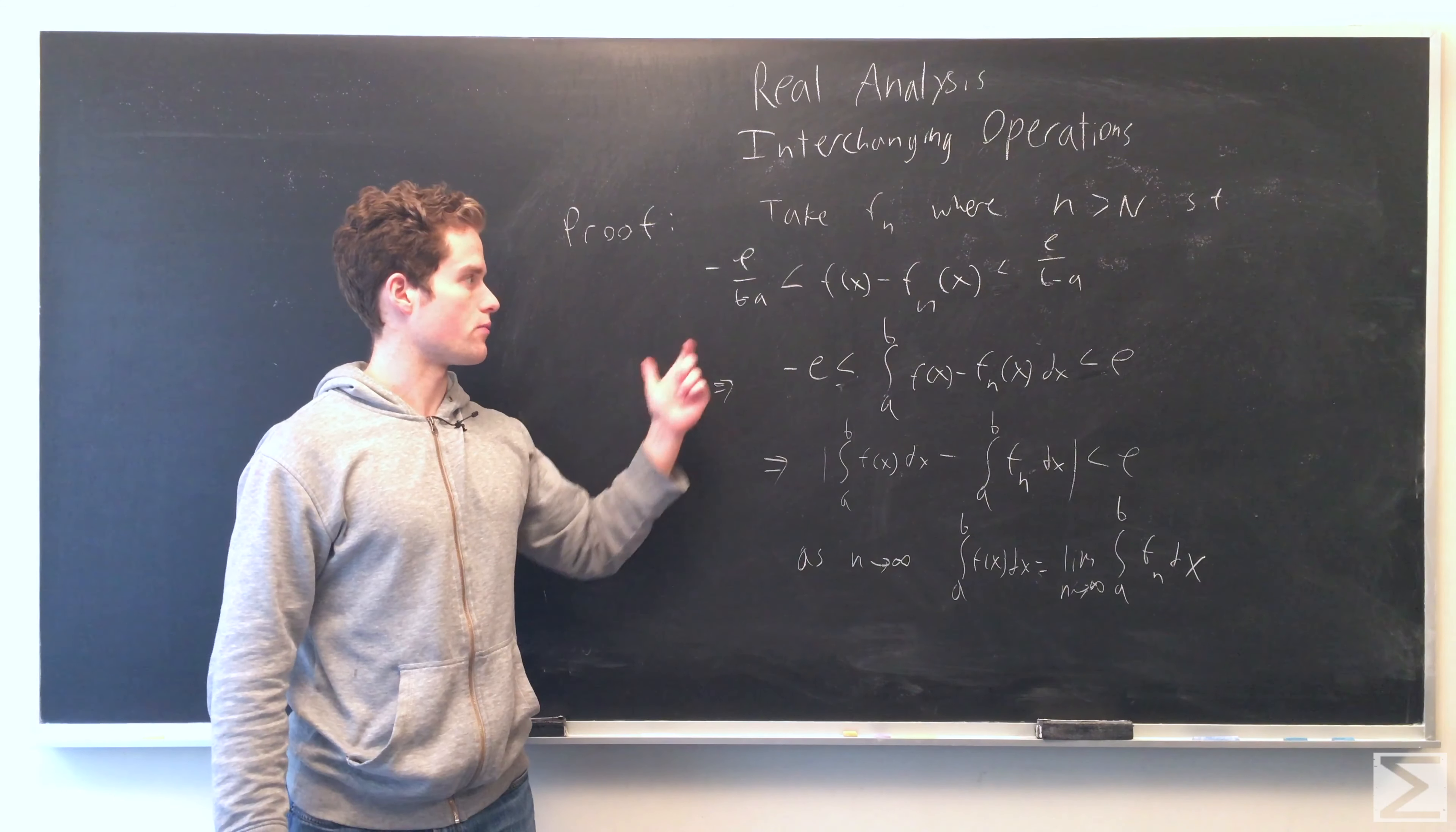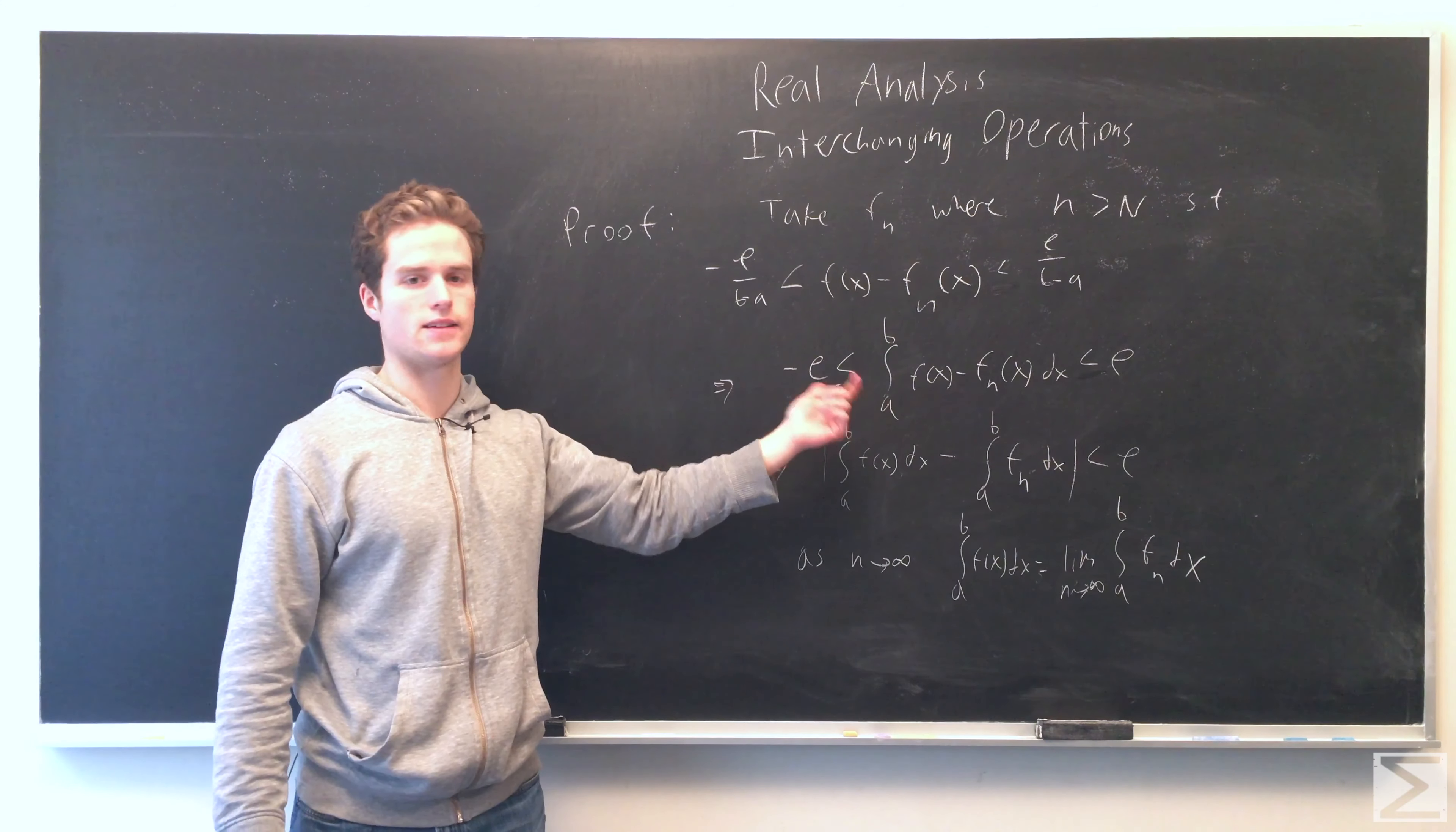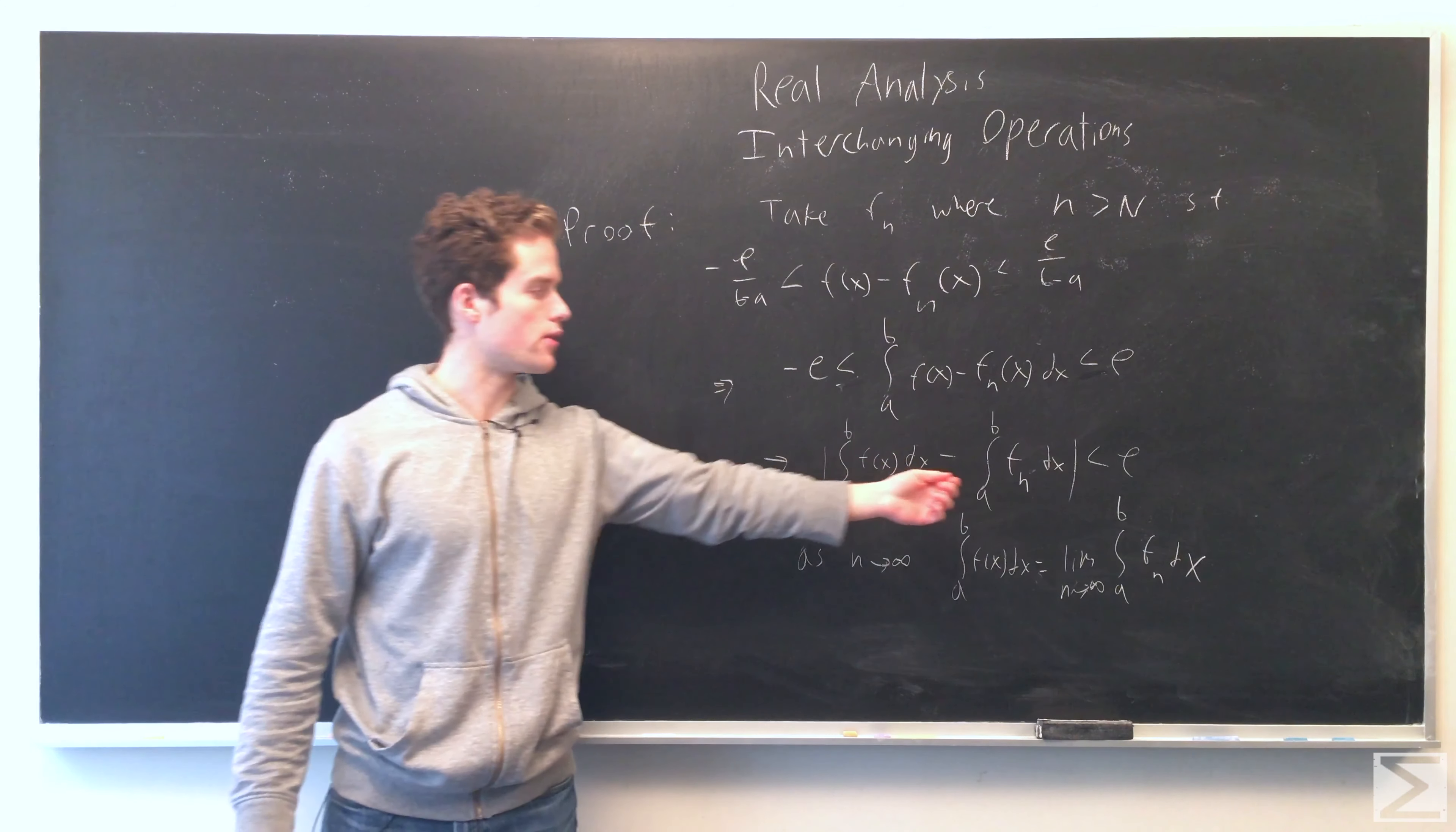So from this we can take the integral of this whole inequality. We get the integral from a to b of f(x) minus f_n(x) dx—the absolute value of that is less than ε—or the integral of f(x) dx minus integral of f_n dx is less than ε for n little n big enough.